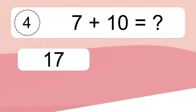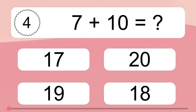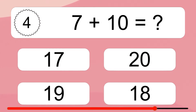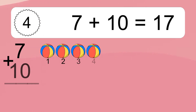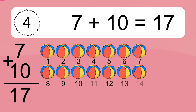7 plus 10 equals what? 7 plus 10 equals 17.